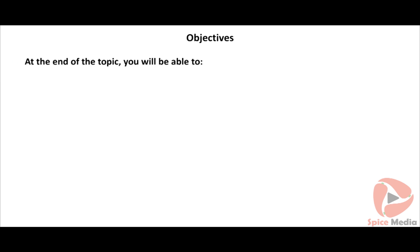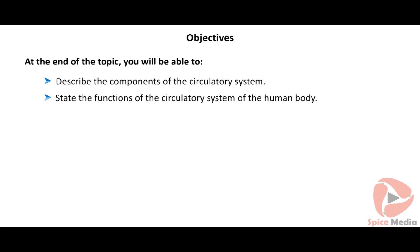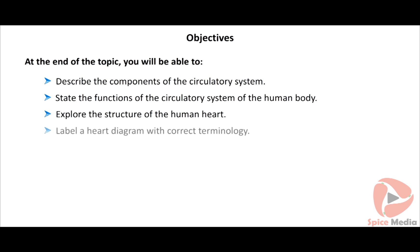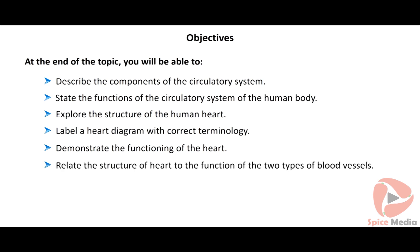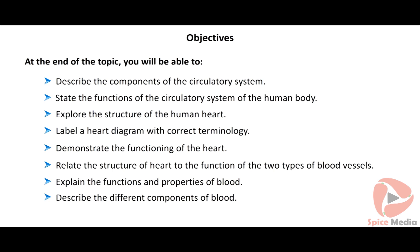At the end of this topic, you will be able to describe the components of the circulatory system, state its functions in the human body, explore the structure of the human heart, label a heart diagram with correct terminology, demonstrate the functions of the heart, relate the structure of the heart to the function of the two types of blood vessels, and explain the functions and properties of blood and its different components.